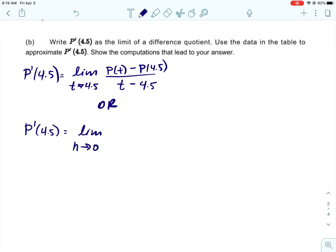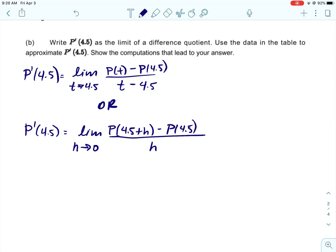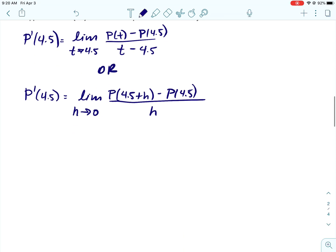The other one, you do not have to write both, you just have to write one of these. It's the one that uses h. On that one, it's the limit as h approaches zero of p of 4.5 plus h minus p of 4.5 over h. So pick one of those. Know both of them for sure because they might throw in the other one. You never know. But both of these are the limit definition of the derivative.